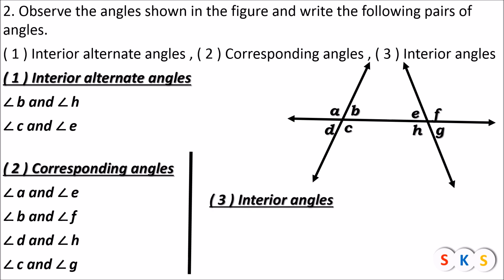Now we will see the interior angles. Interior angles are formed inside the parallel lines and lie on the same side of a transversal. Angle B and angle E is one pair of interior angles — they are inside the parallel line and on the same side of the transversal. The next pair is angle C and angle H, which also lie inside the parallel line and on the same side of the transversal.